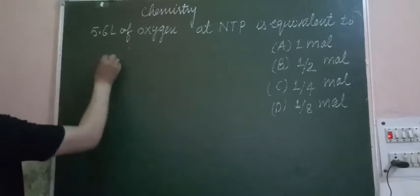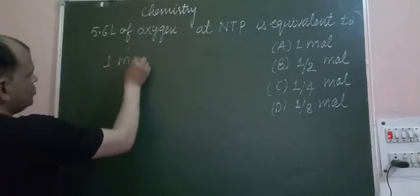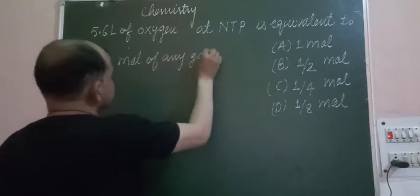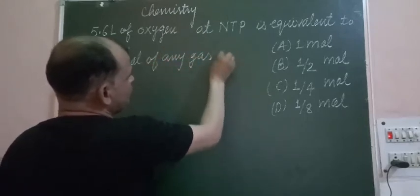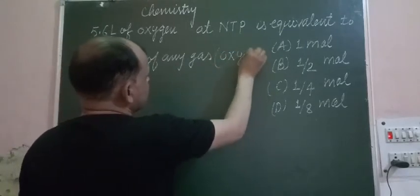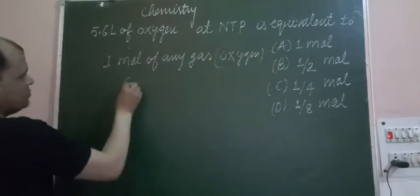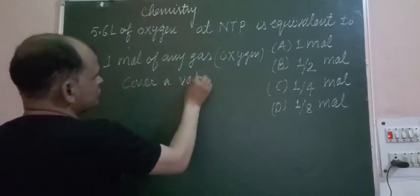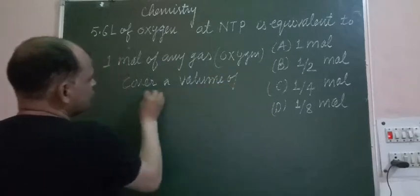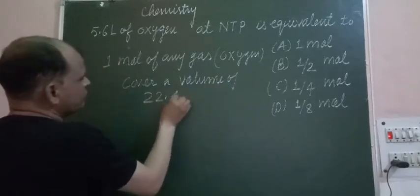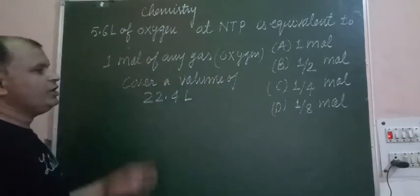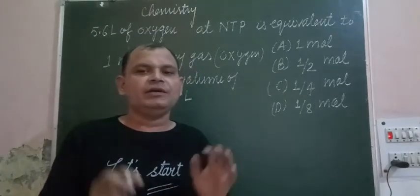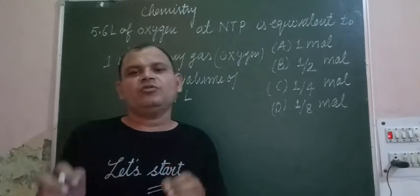So students, you know that one mole of any gas — here the gas given is oxygen — covers a volume of 22.4 liters at NTP. So, 1 mole of any gas occupies 22.4 liters of volume.